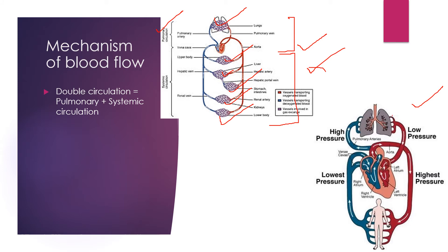From the lungs, oxygenated blood comes to the heart, and the heart pumps it out to all body parts where it is utilized for energy production. As a byproduct, carbon dioxide is produced, which is received again by the heart and pumped out to the lungs for release. In this way, blood communicates with each and every part of our body by completing pulmonary and systemic circulation. Together, these are collectively known as double circulation, as blood completes two circuits.